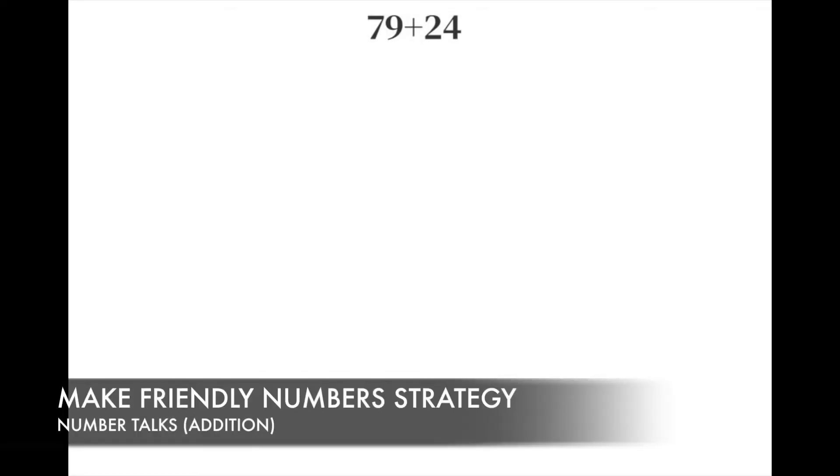Today, I'm going to show you how to use the make friendly number strategy to solve the expression 79 plus 24. A friendly number is a number that ends with a zero, like 40.